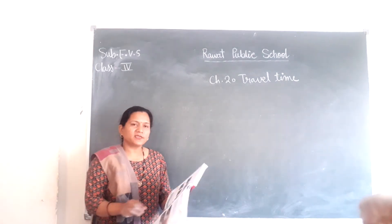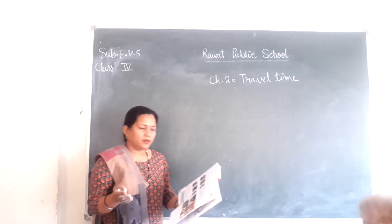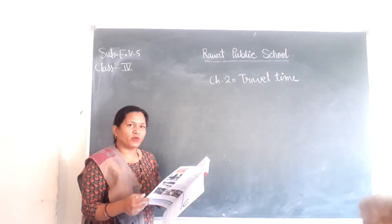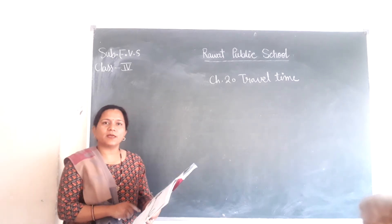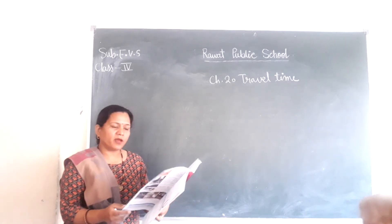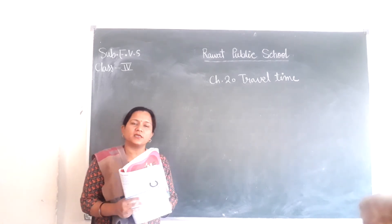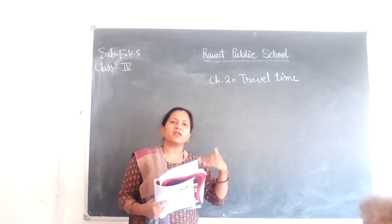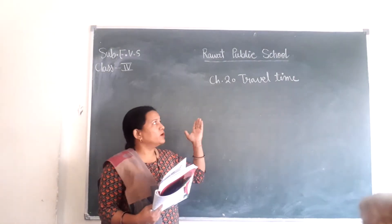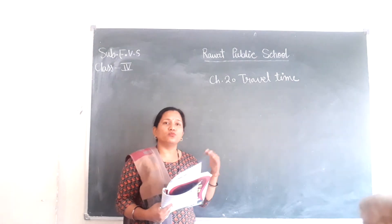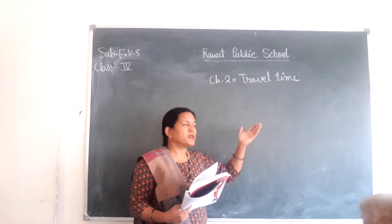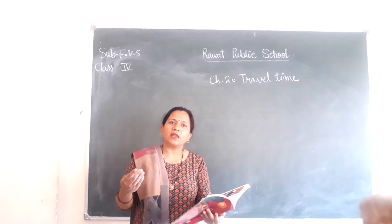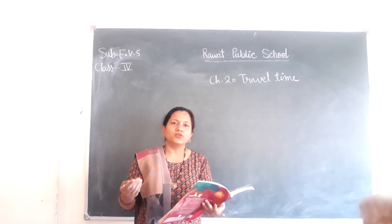In our previous class and previous lectures, we started chapter number 20, Travel Time. It is the last chapter of our syllabus. In this chapter, the topics we have covered include: common names, animals, transportation, travel time, and travel means. Travel means going from one place to another place. In olden times, we used animals to move from one place to another. Later, with technology development, we used vehicles to travel.